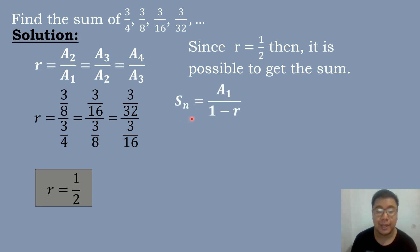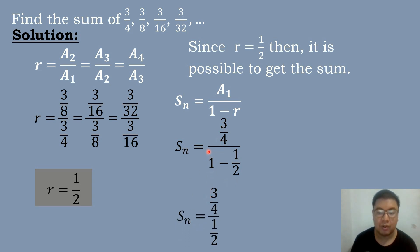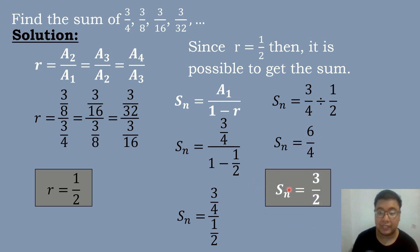Using the formula S sub N equals A sub 1 over 1 minus R, we substitute the values. S sub N equals 3/4 all over 1 minus 1/2. Then 1 minus 1/2 equals 1/2, so S sub N equals 3/4 divided by 1/2. We cross multiply: 3 times 2 equals 6, and 4 times 1 equals 4. The lowest term of 6/4 is 3/2.